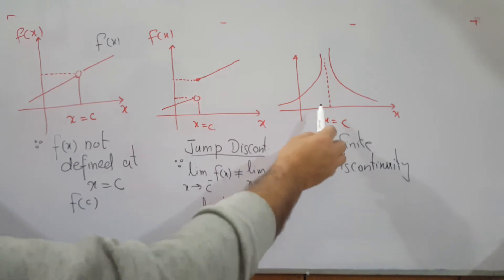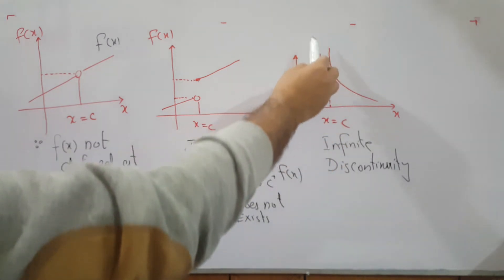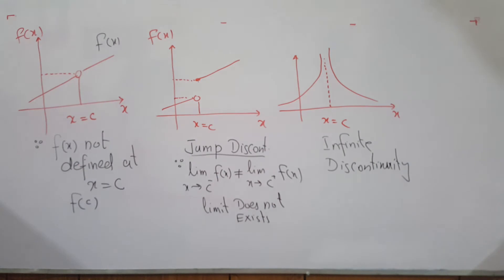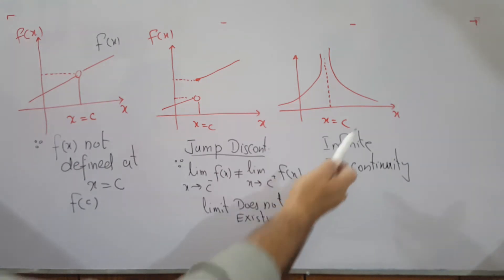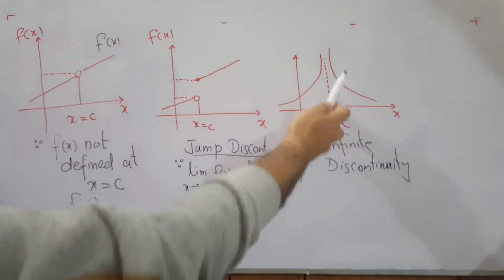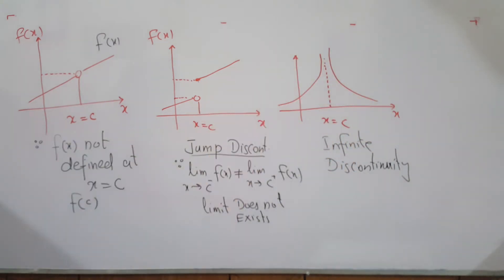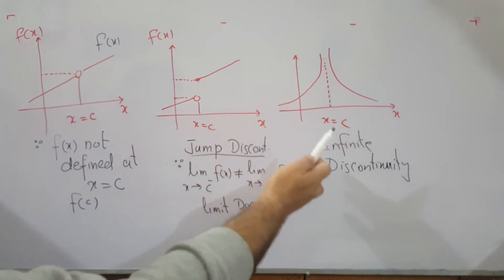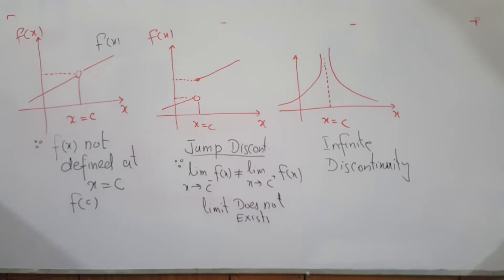Then if you have a function where as x approaches c from the left side it gives positive infinity, and as x approaches c from the right-hand side it also approaches positive infinity, we call this infinite discontinuity.